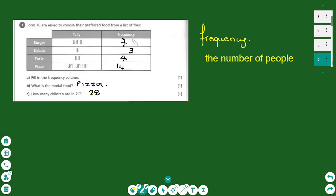This is a type of frequency table showing how we conduct surveys. We have four categories representing different types of food: burger, kebabs, pasty, and pizza. The frequency column represents how many people prefer each food. For the burger I have seven tally lines so it is 7 people, kebabs are 3. You ask people their preference, put a tally line in each category, then sum the lines and write the frequency.